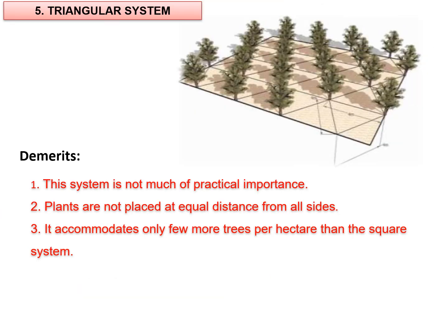The fifth system is the triangular system, based on the principle of the isosceles triangle. Trees are planted as in a square system, but those in even-numbered rows are midway between those in odd-numbered rows instead of opposite to them. The distance between any two adjacent trees in rows equals the perpendicular distance between any two adjacent rows. This system is more complicated and difficult to lay out, not of much practical importance, and the plants are not placed at equal distance from all directions. It accommodates only a few more trees compared to the square system, and is therefore not a popular system.